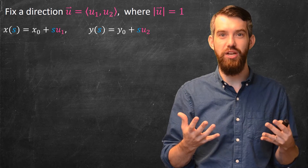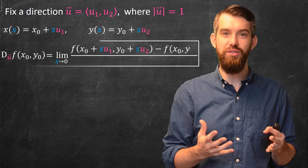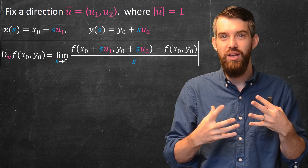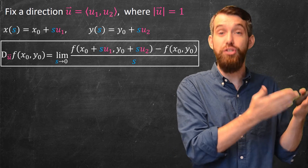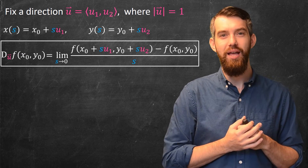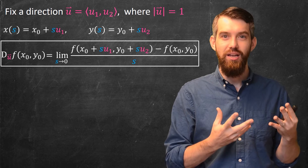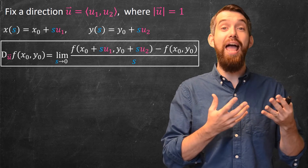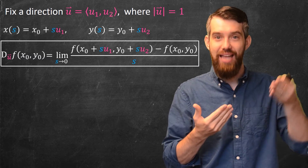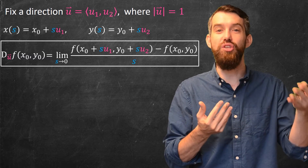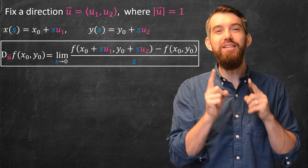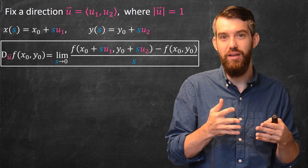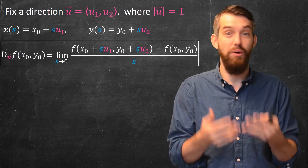Here is my definition of the directional derivative. The notation D_u of f — the directional derivative with respect to u of the function f at the point x₀, y₀ — is a limit of difference quotients. In the numerator we have the function at the new point (x₀ + su₁, y₀ + su₂) minus the function value at the original point (x₀, y₀), all divided by the change s. This is the limit as s goes to zero.